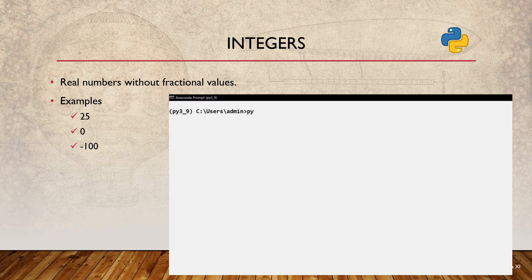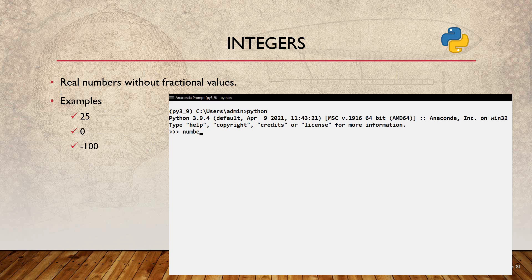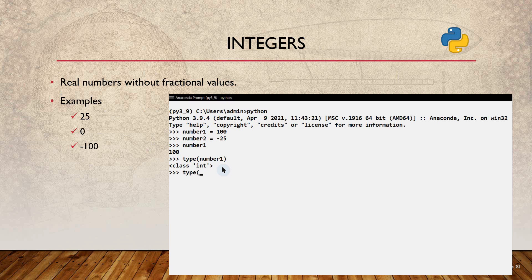To enter into the Python command prompt, I am using python as the command. Now I am taking a variable number1 and assigning a value of 100 to it. I am taking another variable number2 and assigning the value negative 25 to it. If you type number1 at the command prompt, you get the value 100. Using the type() function on number1 returns int, and similarly the type of number2 is also integer.